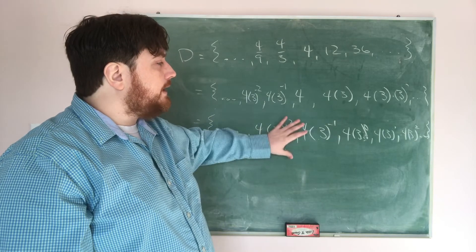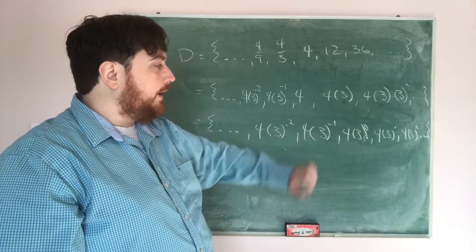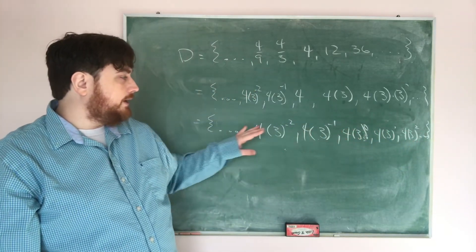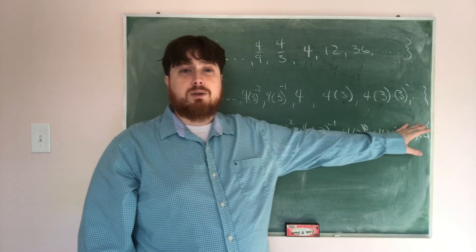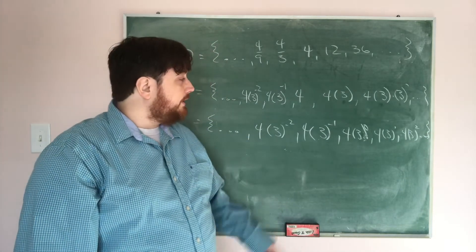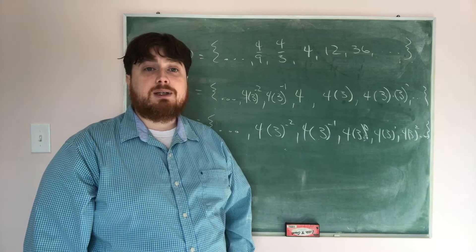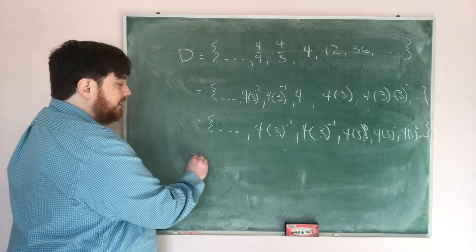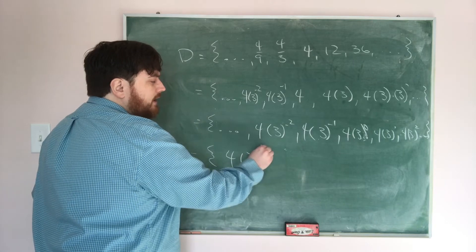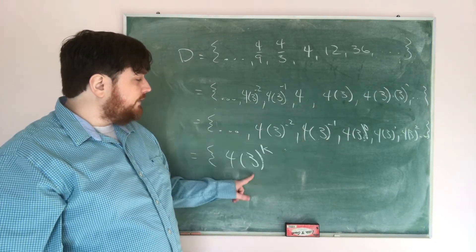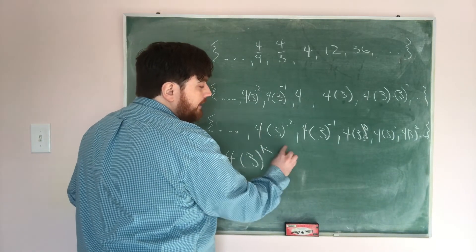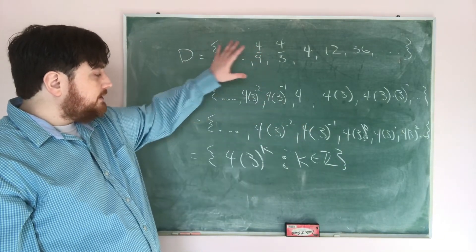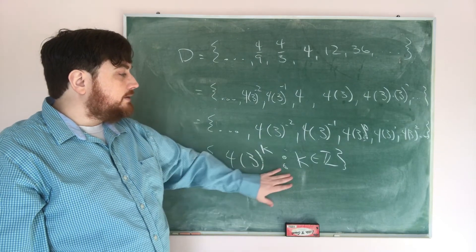Writing it this way helps us see the pattern clearly: we take 4 and multiply by a power of 3. The powers include 0, 1, 2, and also negative 1, negative 2, negative 3, negative 4, and 3, 4, 5 on the other side. So all the powers are just integers — positive integers, negative integers, and 0. This means the set is all numbers of the form 4 times 3 to the k, such that k is an integer.